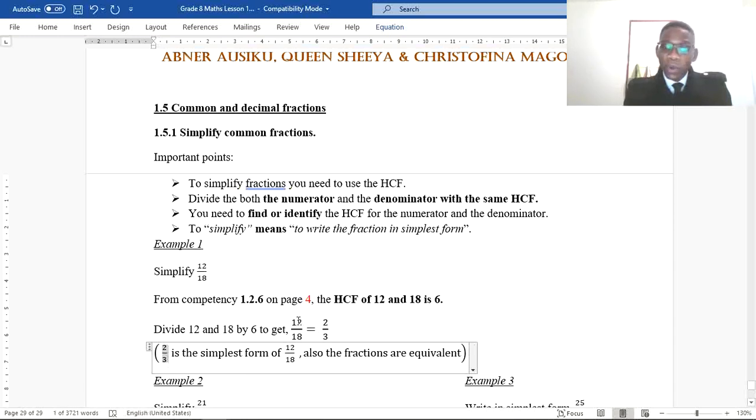So 2 over 3, this little fraction now, is the simplest form of 12 over 18. We also find out that these two fractions, 12 over 18 and 2 over 3, are what we call equivalent fractions. You probably have done this in Grade 6 and 7.